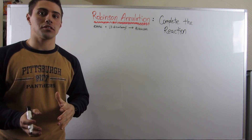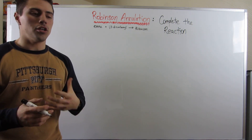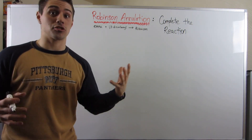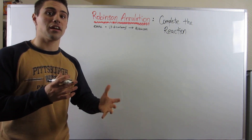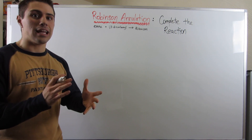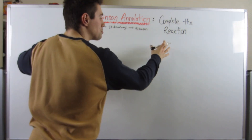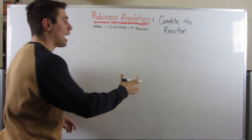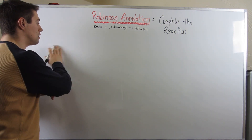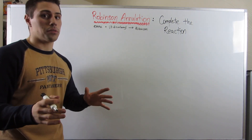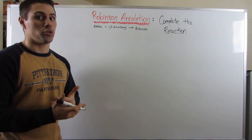Okay gang, now that we've talked about the mechanism behind a Robinson annulation, you're not always going to have time to draw up the full mechanism. It's great to know it, but sometimes you need something a little bit faster. I think I've found a pretty decent way of explaining how to take your enone and your dicarbonyl and predict your Robinson product. I don't think this video is going to be all that long — once we get the hang of how to do this, you'll be great at it.